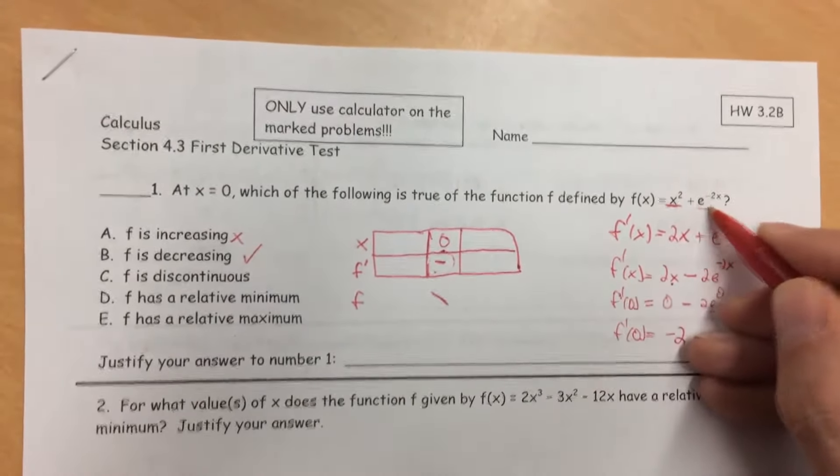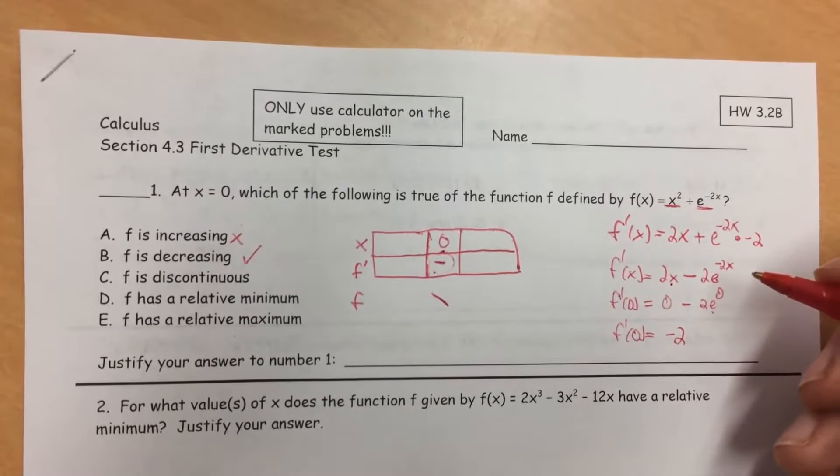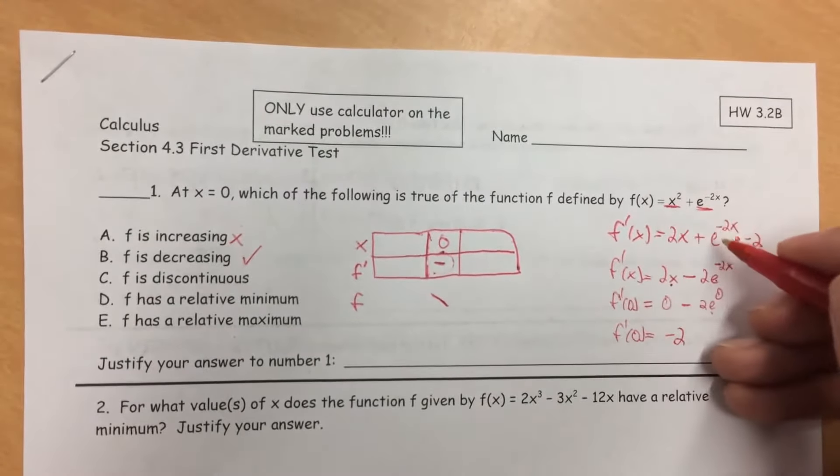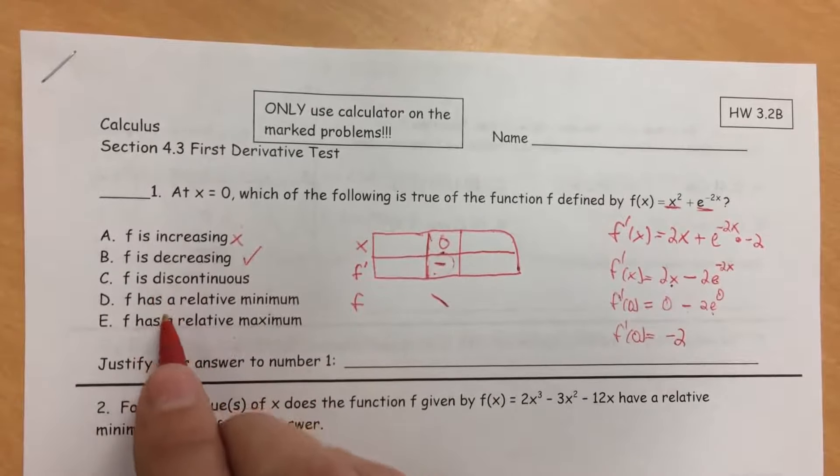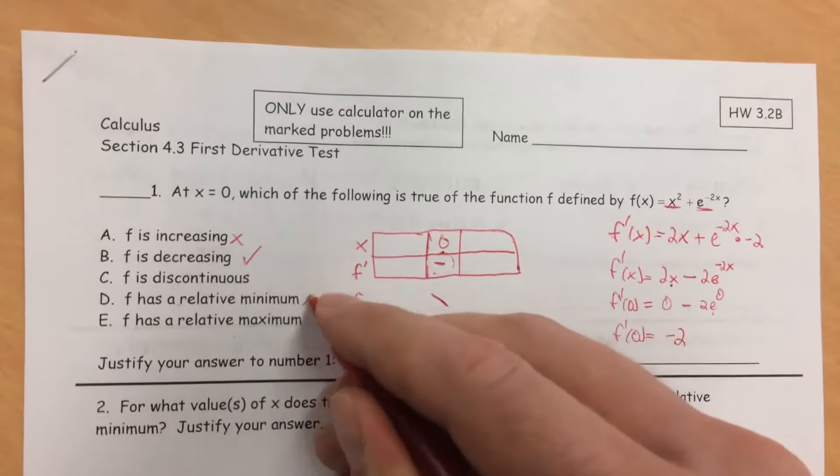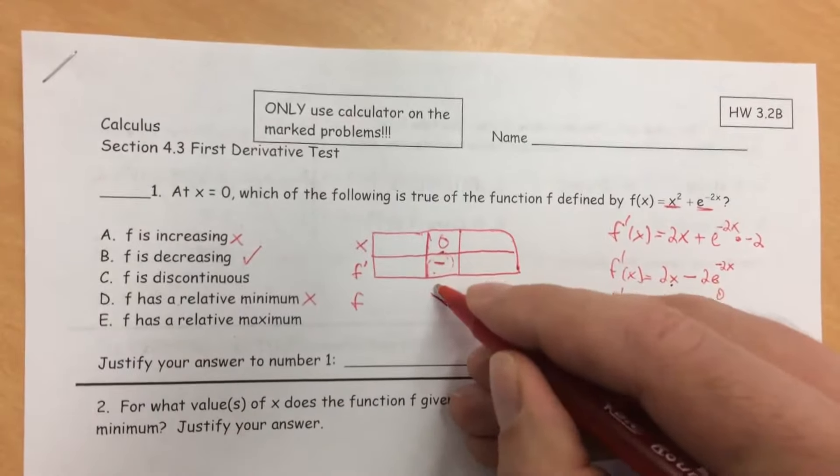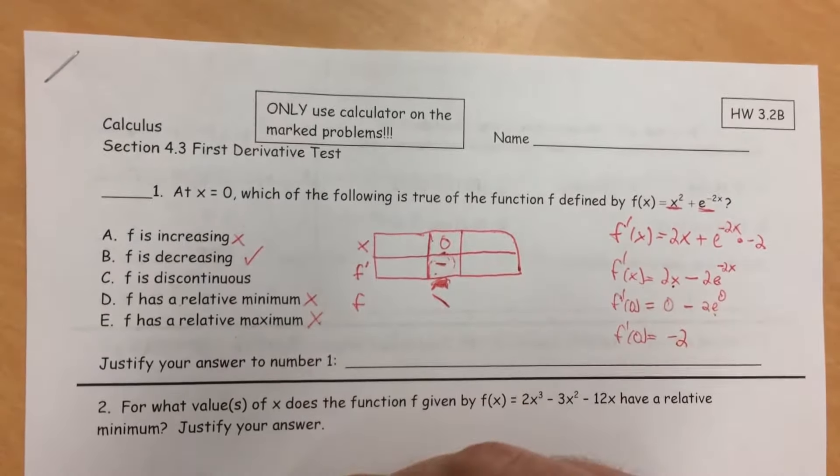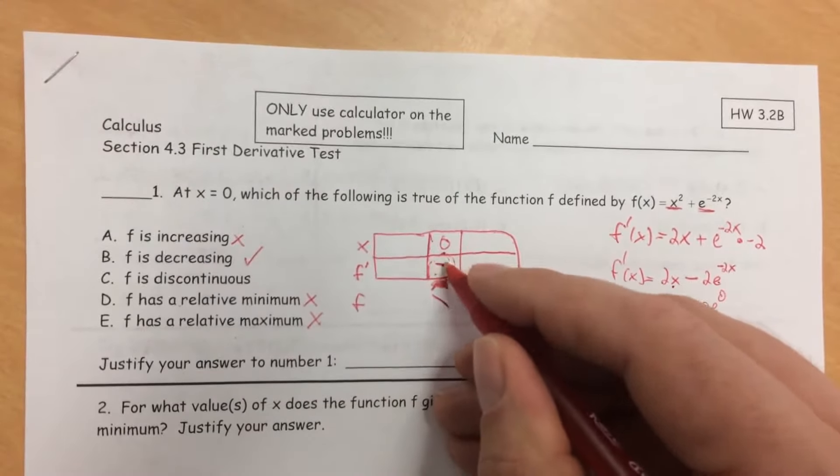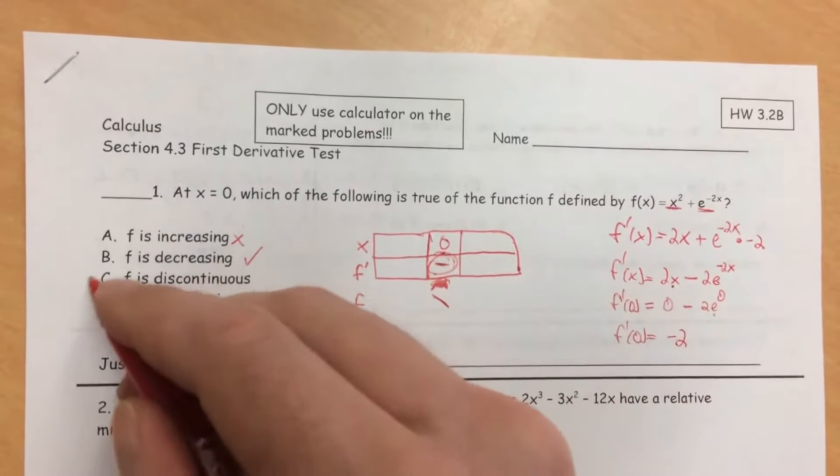Is f discontinuous? No, this is a polynomial and an exponential, neither of which are discontinuous anywhere. They're always continuous. Does f have a relative maximum? No. f' needs to be 0 for f to have a relative maximum, and it's not. Also, f' needs to be 0, and f' is negative here.